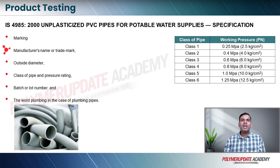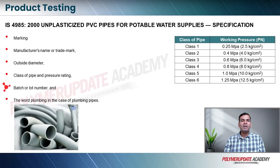Next time you go to a hardware store, just try to read what is written on the pipe. There would be the standard name under which it has been approved. There has to be a manufacturer's name or trademark, an outside diameter value, and the class of pipe and pressure rating. Class one is the working pressure of 0.25 megapascal, going up to class six which is 1.25 megapascal. The batch or lot number is also important, helping you understand which particular batch has produced defective pipes. And there should be the word 'plumbing' written on a plumbing pipe.